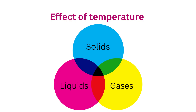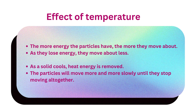Next, let's look at the effect of temperature on different substances — solids, liquids, and gases. These substances are made up of tiny particles that are always moving. The more energy the particles have, the more they move. As a solid cools, heat energy is removed, and the particles move more and more slowly until they stop moving altogether.